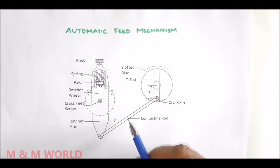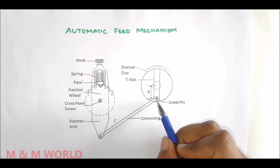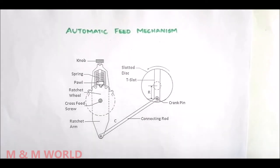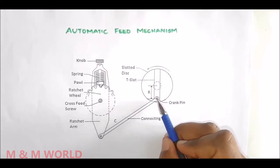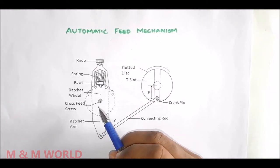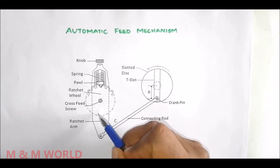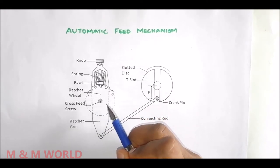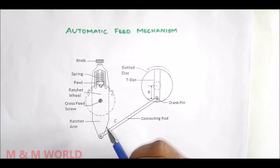One end of the connecting rod is connected to the T-slot of the slotted disk using a crank pin, and the other end of the connecting rod is connected to the ratchet arm or rocking arm. The ratchet arm is connected to the center of the ratchet wheel, and the ratchet wheel is keyed to the cross feed screw.